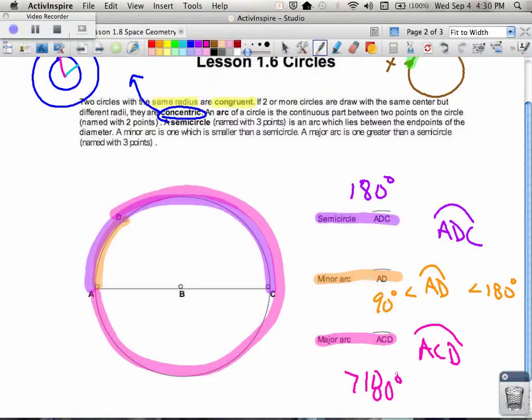So three kinds of arcs in a semicircle—or sorry, in a circle, pardon me. A minor arc, which is in between 90... oh sorry, I said 90 and that's not what I meant. What I meant is it's more than zero degrees and less than 180. A semicircle in the purple, which is exactly 180 degrees, and a major arc, which is more than 180 degrees.